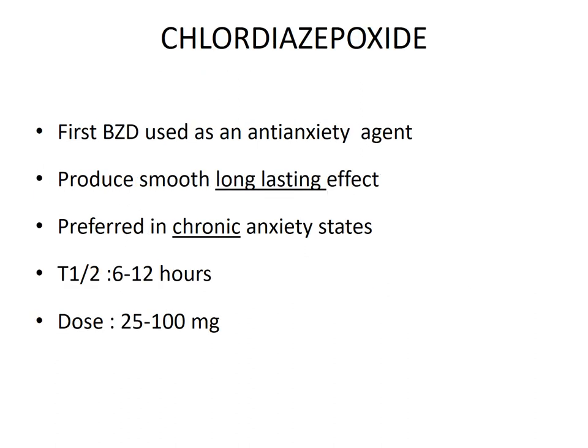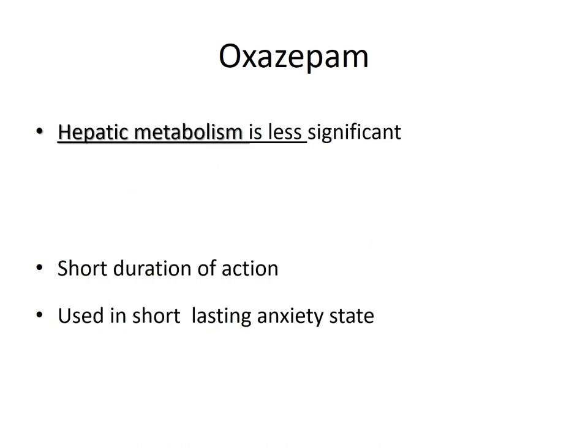Now let's see a few important benzodiazepines. The first one is chlordiazepoxide. It was the first benzodiazepine used as an anti-anxiety drug. It produces a smooth but long-lasting effect, so this agent is preferred in chronic anxiety states and does not produce much benefit in acute situations. It has a half-life of 6 to 12 hours and is most commonly used in a dose of 25 to 100 milligrams. The next agent is oxazepam.